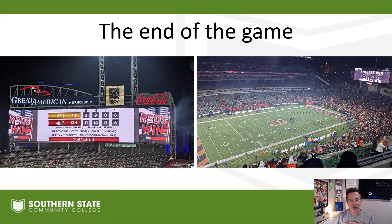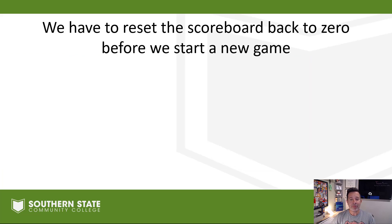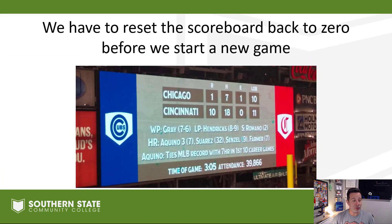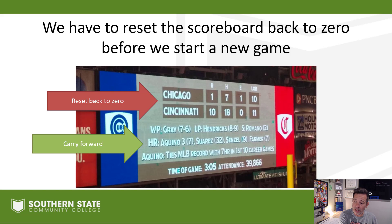We've talked about how it's kind of like the end of a ball game. We've got the scoreboard — it shows our final score, who won, who lost. No different than a month or a quarter or a year in business where we're keeping track of revenues and expenses trying to figure out if we made a profit. At the end of that accounting period, we've got to reset our scoreboard back to zero, but some information and statistics we carry forward.